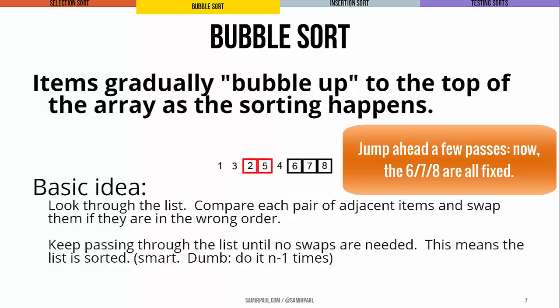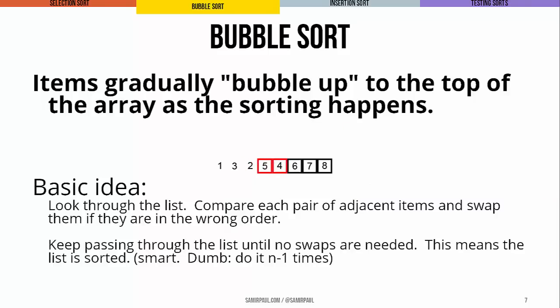We don't have to do full passes for every element of the array. If we ever iterate through the entire array and don't do any swaps, that means the array is now in sorted order, which means we can stop running the algorithm early. This saves us time and resources — that would be the efficient way to exit bubble sort as soon as we're sure it's done its job.